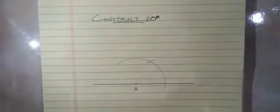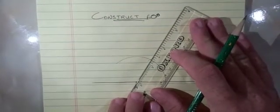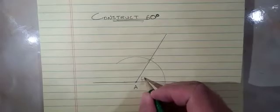Having done that, we line up our ruler with the point on the line and the intersection, draw a line, and now we have 60 degrees.